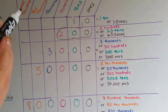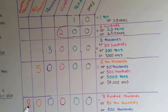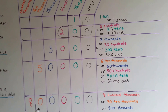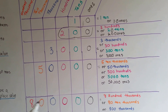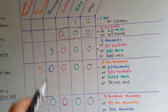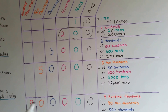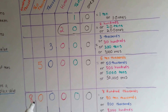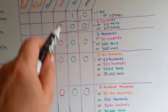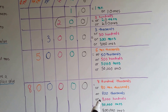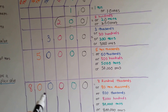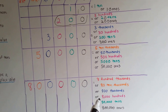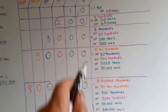This is in the hundred thousands place, and it's an eight. So, that's eight hundred thousands. But, we could also say it's eighty ten thousands. Or, eight hundred one thousands. It's eight thousand hundreds. Or, we could say it's eighty thousand tens. Or, eight hundred thousand ones.